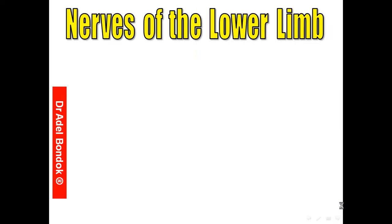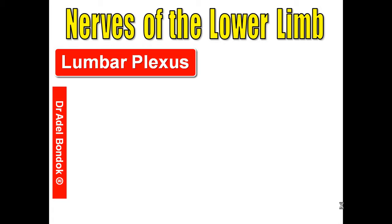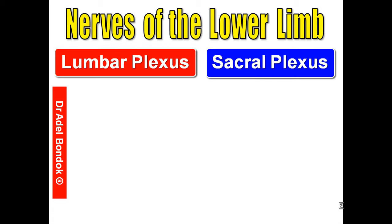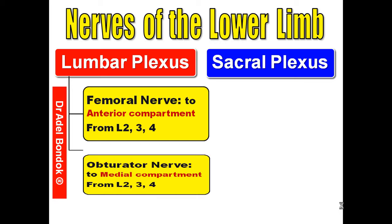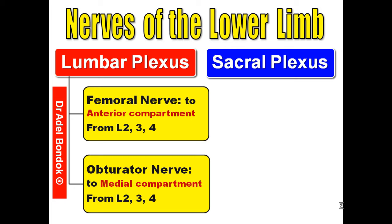Hello everyone, this is Dr. Adel Banduk, Professor of Anatomy and Neuroscience. Today I will talk about the nerves of the lower limb. The lower limb is supplied by the lumbar plexus and the sacral plexus. The lumbar plexus gives two nerves: the femoral nerve, which supplies the anterior compartment of the thigh and arises from L2, L3, and L4; and the obturator nerve, which supplies the medial compartment of the thigh and also arises from L2, L3, and L4. The femoral nerve arises from the posterior divisions and the obturator nerve arises from the anterior divisions.